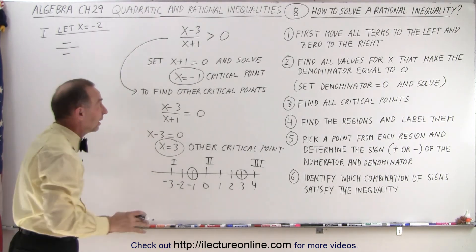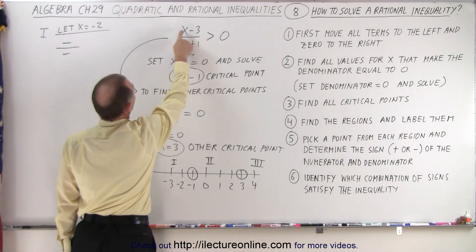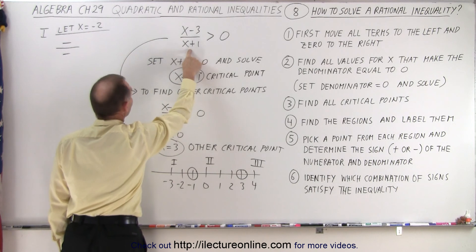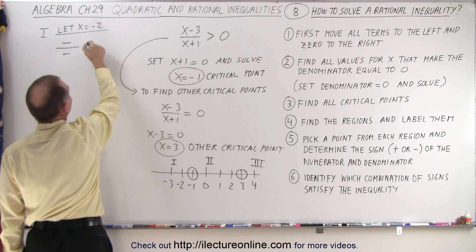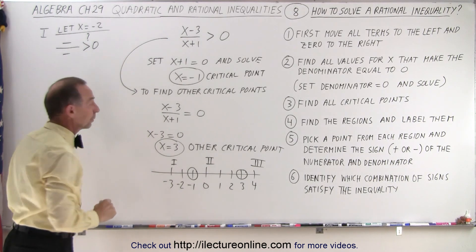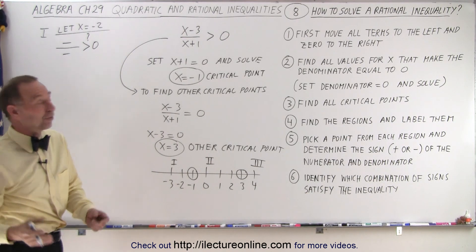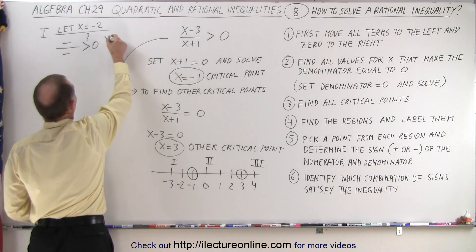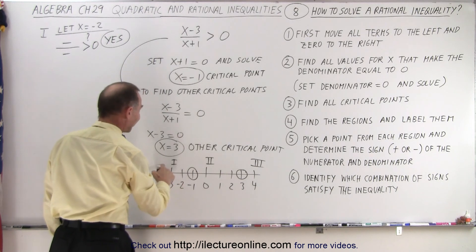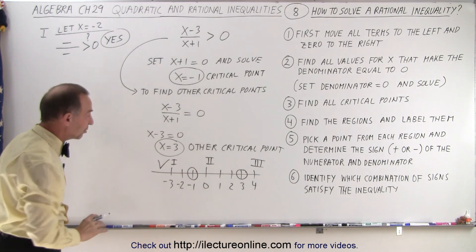So if x is negative two, the numerator gives negative five, which is negative, and the denominator gives negative one, which is also negative. Is negative divided by negative greater than zero? A negative divided by a negative is a positive number, and that is greater than zero. So the answer is yes — I picked a point in a region that satisfies the inequality, so I put a check mark saying that's a valid region.